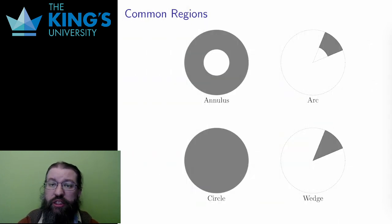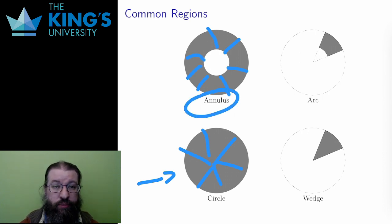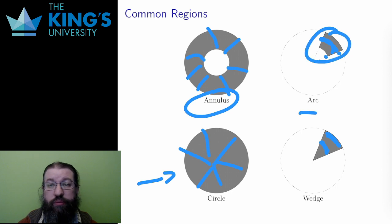What are some common regions that can be described in polar coordinates? Unsurprisingly, since the coordinate system is built around circles, the circle is a common region. It's all points within a given radius for any angle. I could also put a lower bound on the radius, all points between two given radii for any angle. What I get is a ring, and the mathematical term for such a ring is an annulus. If I don't want the whole circle, I can get a wedge by restricting the angle to a particular range. And finally, by restricting both the angle and the radius to particular ranges, I can get a portion of the annulus, an arc.